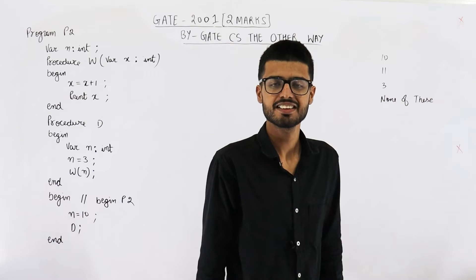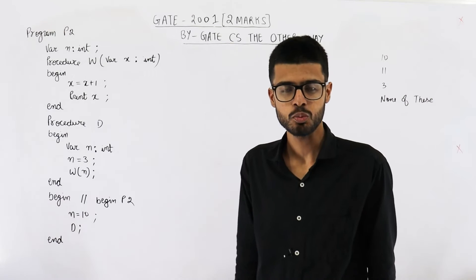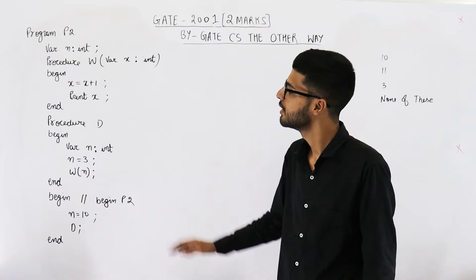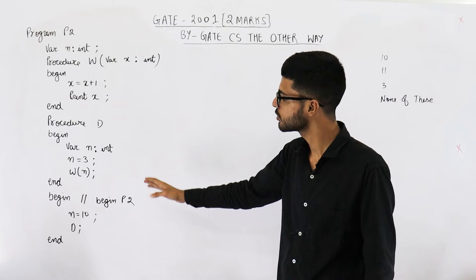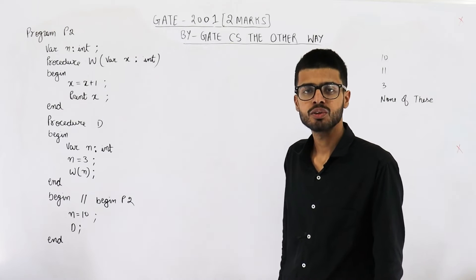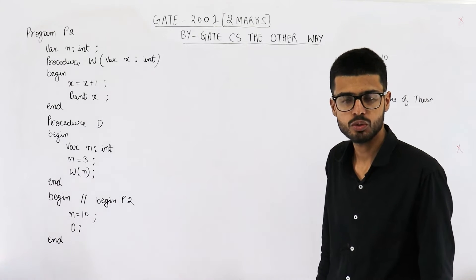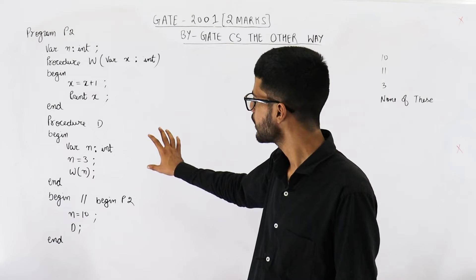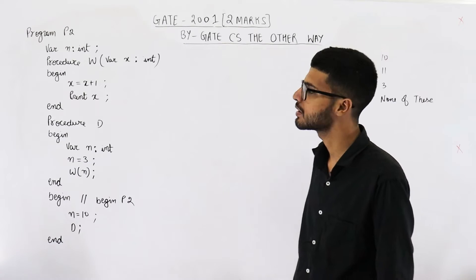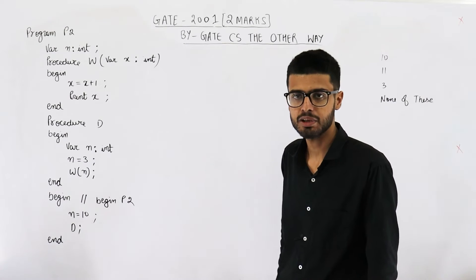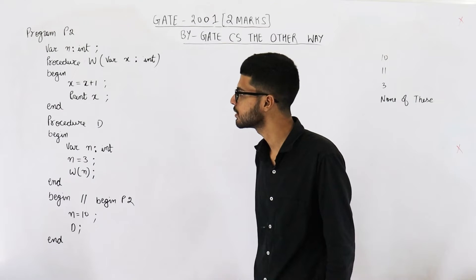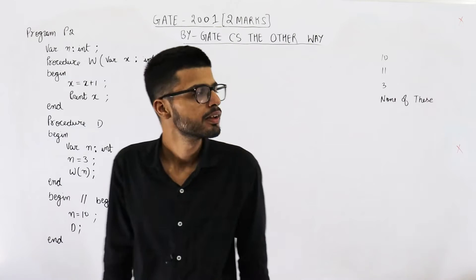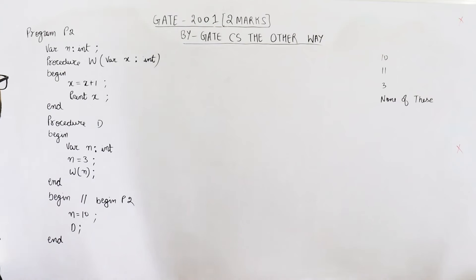Hello dear students, welcome back. This question is for two marks and is from the GATE 2001 exam. They have given you this program and you need to find its output. In the question, they are mentioning that this programming language uses dynamic scoping and all the parameters are passed by reference.